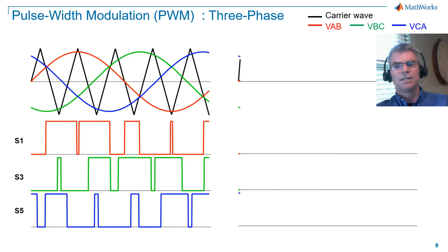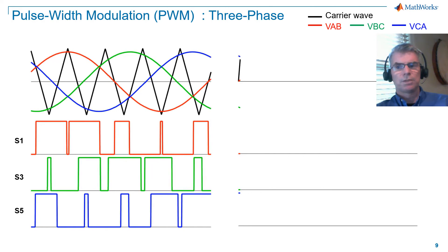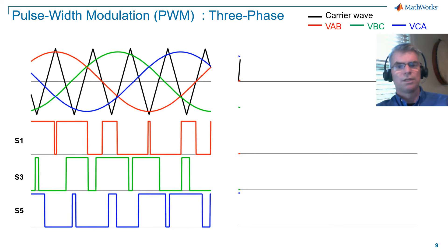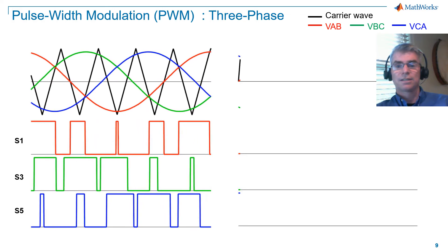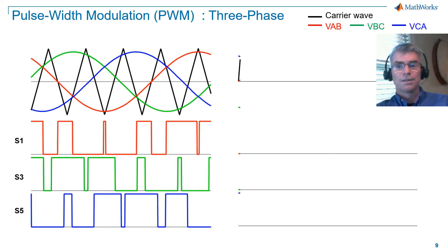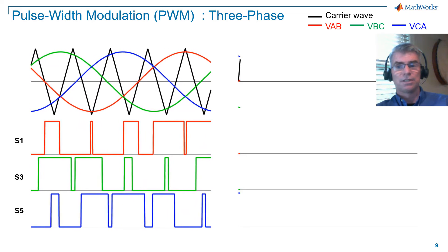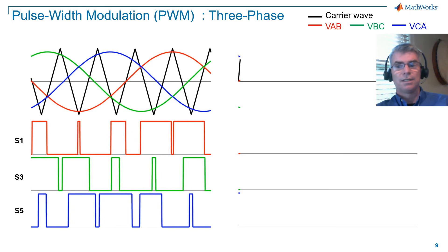What you are seeing here is the generation of the PWM signals for switches 1, 3, and 5. The PWM signals for switches 2, 4, and 6 are the logical knot of the PWM signals for switches S1, S3, and S5.